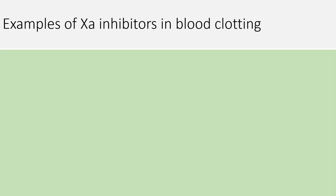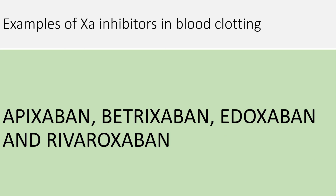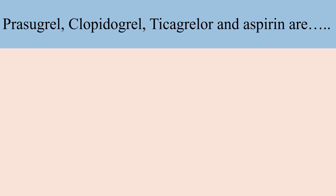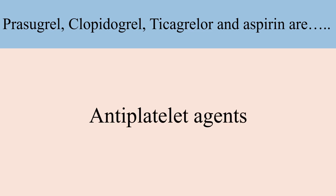Examples of factor 10a inhibitors in blood clotting: apixaban, betrixaban, edoxaban, and rivaroxaban. Prasugrel, clopidogrel, ticagrelor, and aspirin are antiplatelet agents.